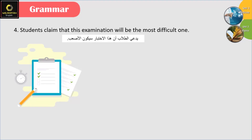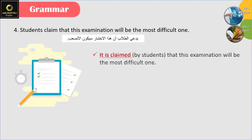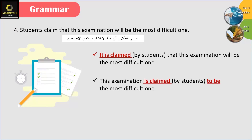Number 4: 'Students claim that this examination will be the most difficult one.' We can say: 'It is claimed by students that this examination will be the most difficult one.' Or we can say: 'This examination is claimed by students to be the most difficult one.'